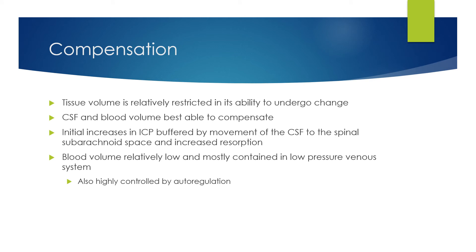Compensation does occur to a degree. Tissue volume is relatively restricted in its ability to undergo change, whereas CSF and blood volume are best able to compensate. Initial small rises in intracranial pressure are buffered by the movement of CSF into the spinal subarachnoid space and increased reabsorption. The blood volume is relatively low within the head and is mostly contained within a low pressure venous system, tightly controlled by autoregulation. But if tissue volume is increasing, after CSF is moved out of the cranial vault, blood can be pushed out as well.